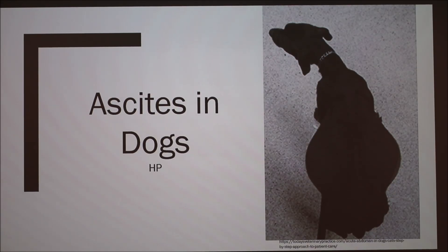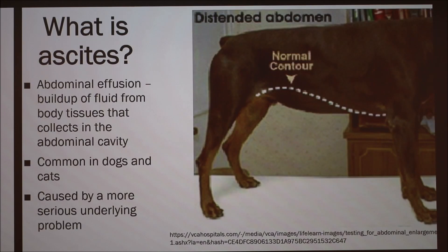Today I'm going to talk about ascites in dogs. Ascites is an abdominal effusion — a buildup of fluid from the body tissues that collects in the abdominal cavity. Sometimes it will end up flooding into the chest cavity as well, once the abdominal cavity gets too full.